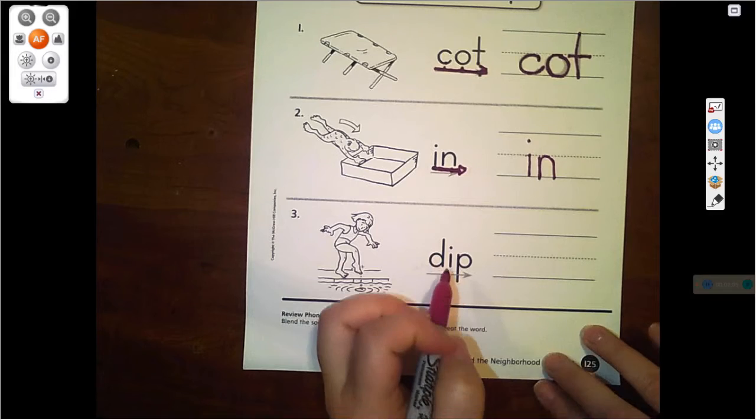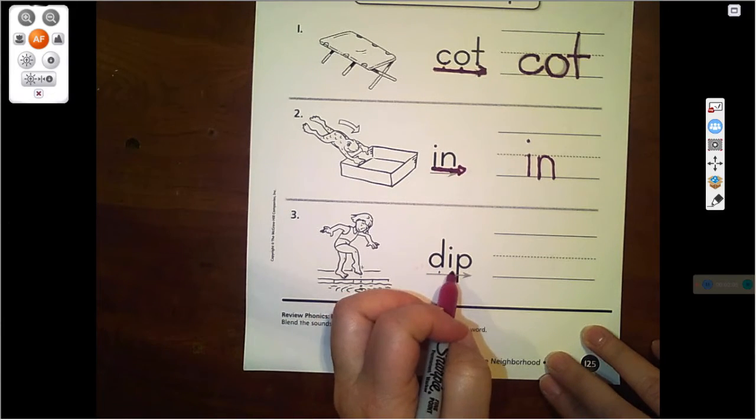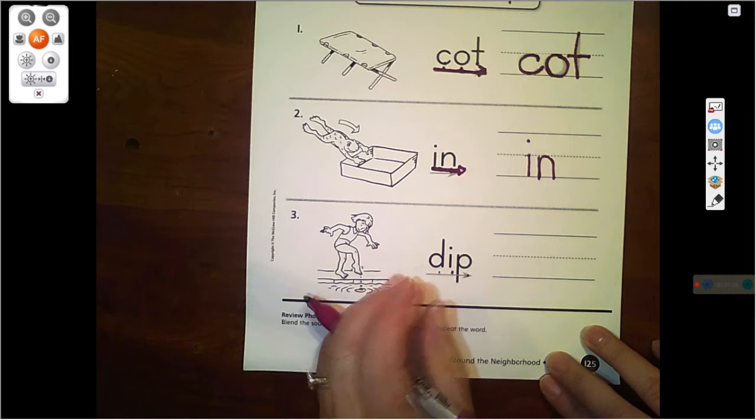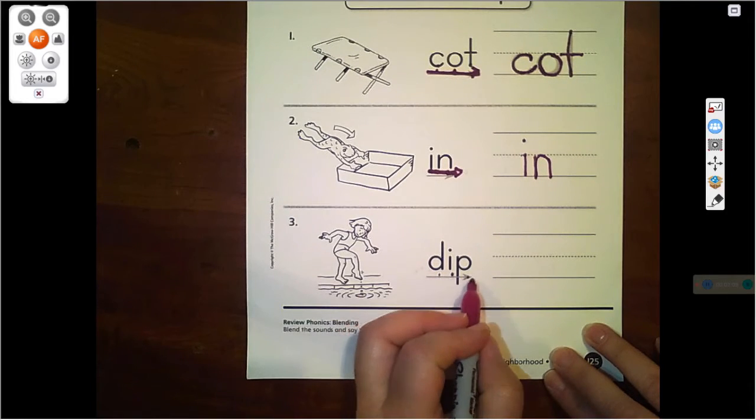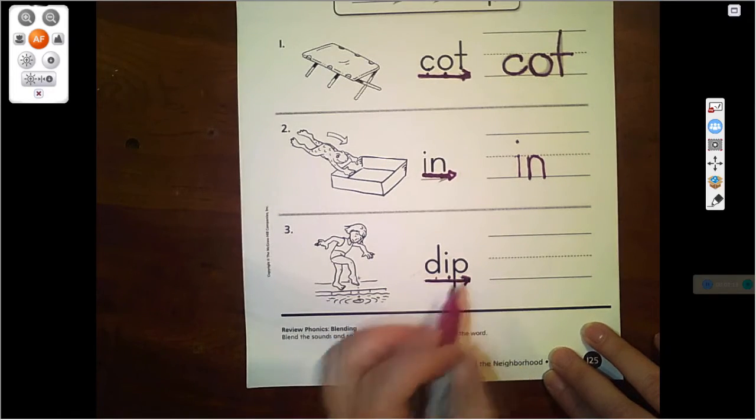Let's look. D says D. I says I. P says P. D, I, P. Dip. Dip. The word is dip.